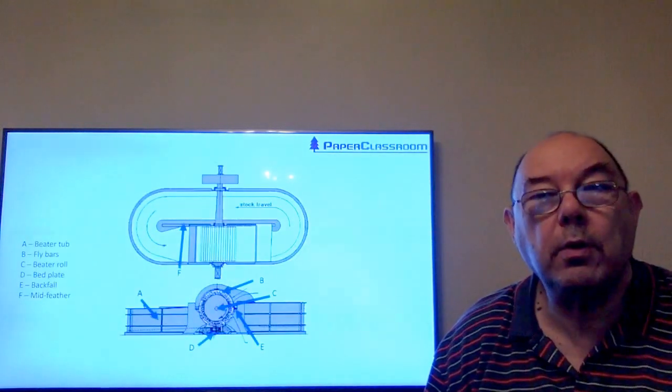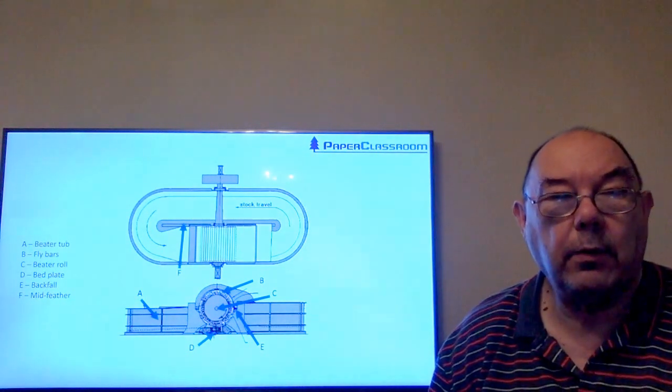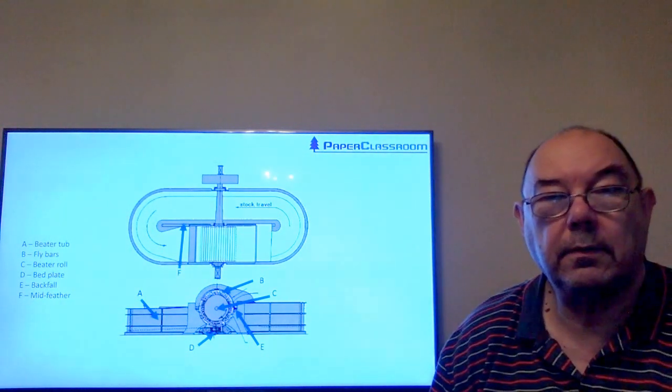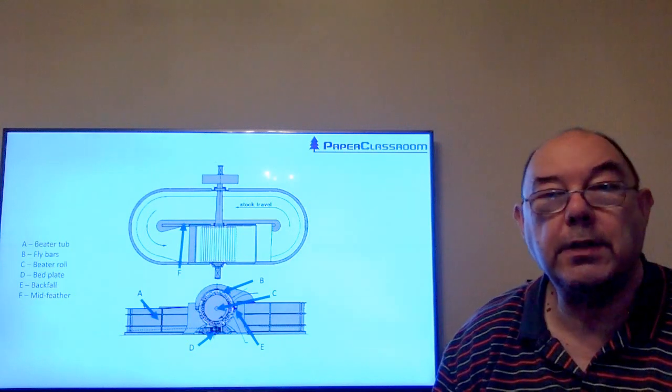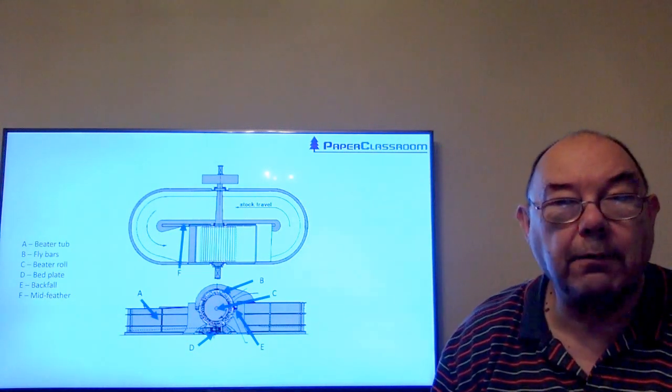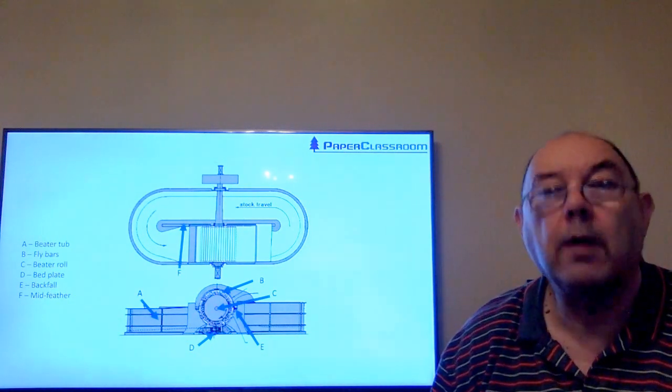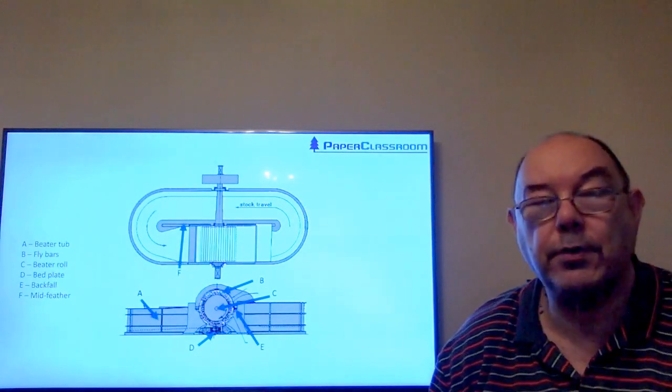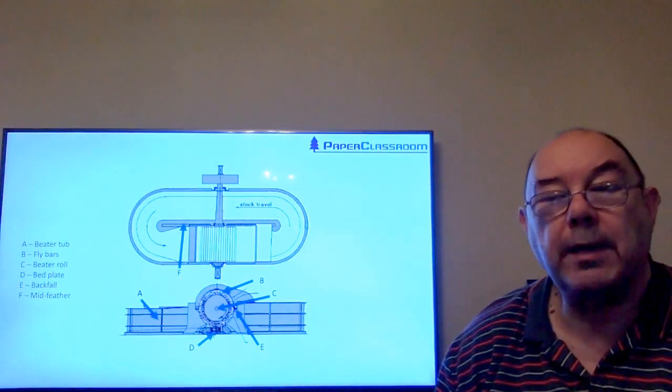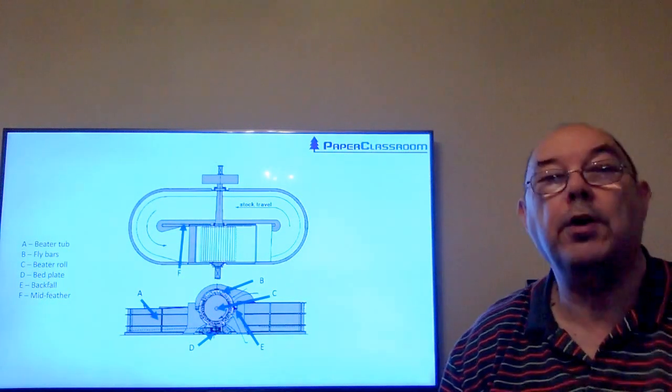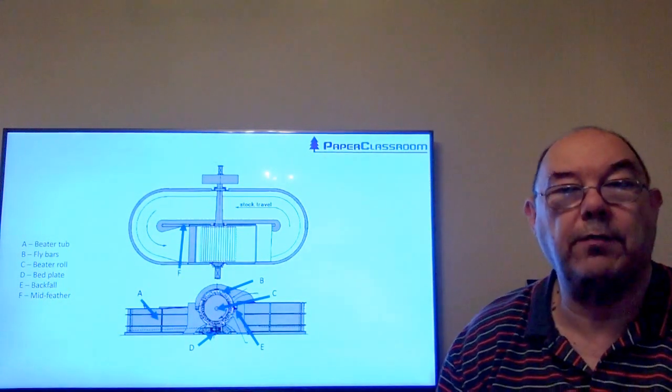This is a plan view of the beater with all the relevant parts labeled. As you can see, we've got the beater tub itself, the beater roll, and on the beater roll are the bars or knives as some people call them. Because they're on the beater roll and the beater roll is turning, we call those fly knives because they're flying around.